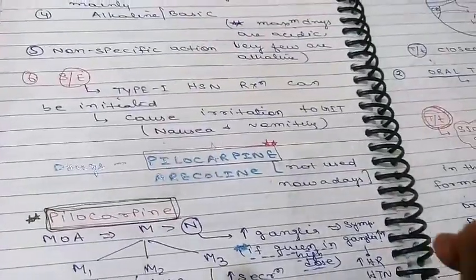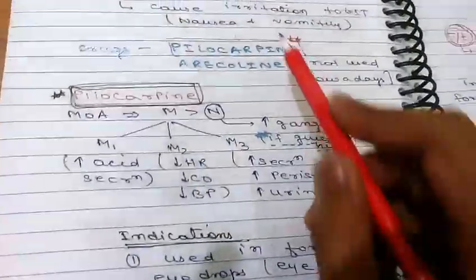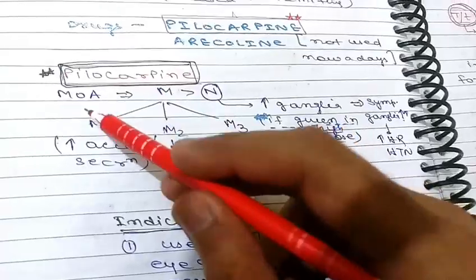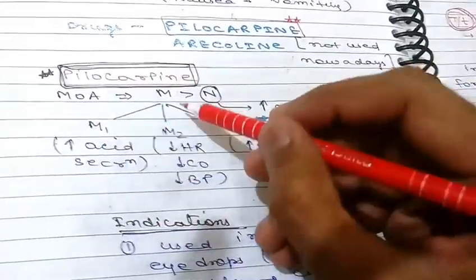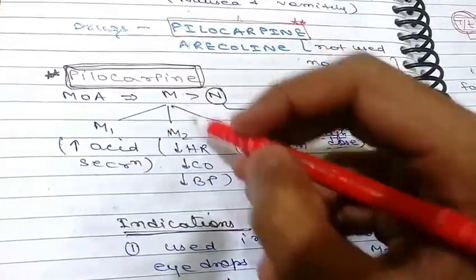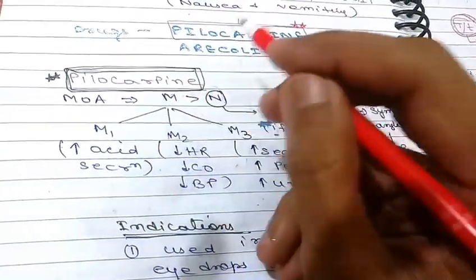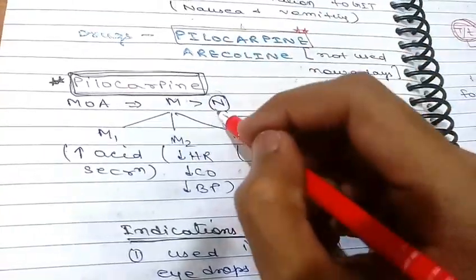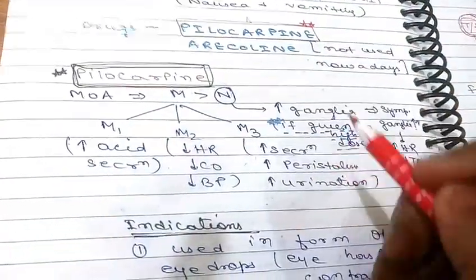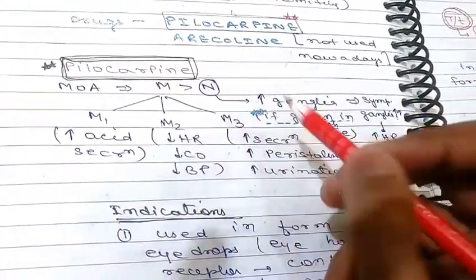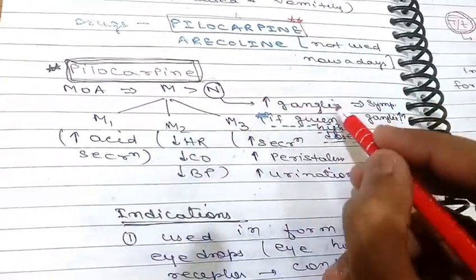The important drugs in the alkaloid group are pilocarpine and arecoline — arecoline is not used today but pilocarpine is very important. Pilocarpine's mechanism of action is stimulation of muscarinic as well as nicotinic receptors, but muscarinic receptors are more stimulated compared to nicotinic receptors.